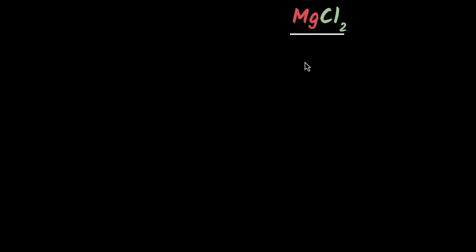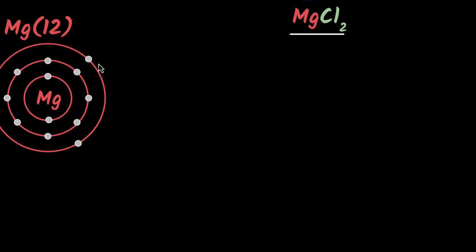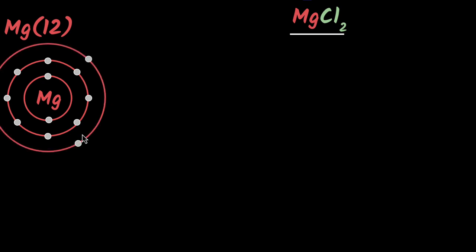Let's consider magnesium chloride. Magnesium has 12 electrons. The first two go in the first shell, the next eight in the second shell — so we are done with 10 — and the two remaining go in the last shell. As magnesium, we would want to get rid of these two electrons; if we did, we would go back to having eight electrons and achieve octet.